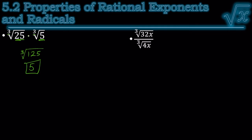Let's try this one. The indexes are the same again, so I can rewrite it as one division. Then we can simplify: 32 divided by 4 is 8, and x divided by x is 1 — they cancel out. And the cube root of 8 is 2.